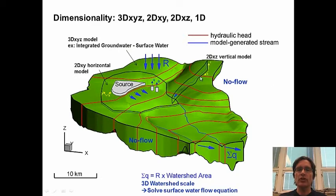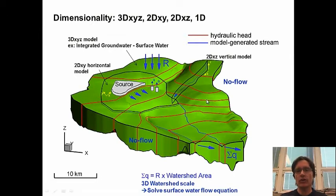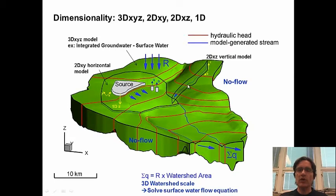Another option is to simulate a 2D vertical model — this is my preferred approach, much simpler than a fully 3D system and it includes the vertical dimension, which turns out to be very important in contaminant transport modeling. We need to reproduce vertical gradients, which are only possible in a 2D vertical or 3D model. We can also simulate 1D systems — for instance, just vertical transport from a source zone in a recharge area, or along a flow line. There are lots of ways to simplify the system, but you need to make a good choice depending on the physical conditions.